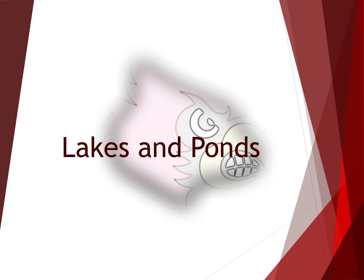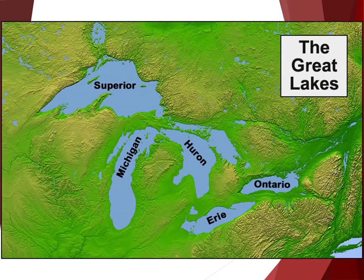Lakes and ponds are standing bodies of water surrounded by land, and the communities found in lakes depend on their size and depth. Some very large lakes, such as the Great Lakes of North America, have many of the same characteristics as oceans. Depending on the depth, lakes are considered to have zones which result from differences in light, temperature, oxygen, and nutrient availability.